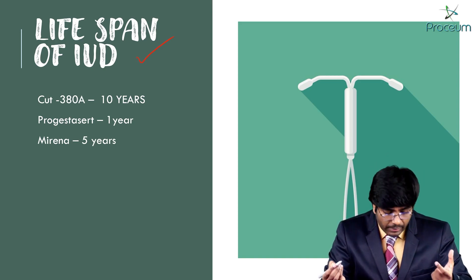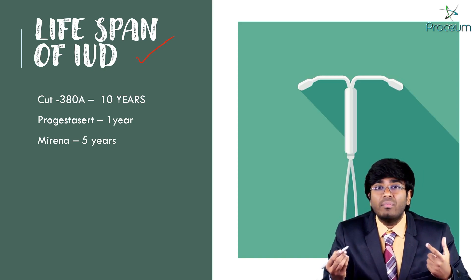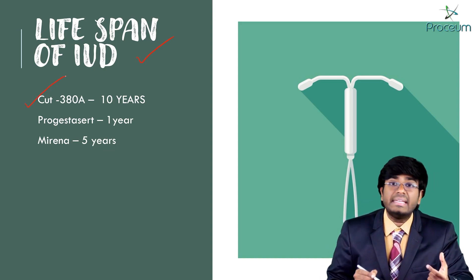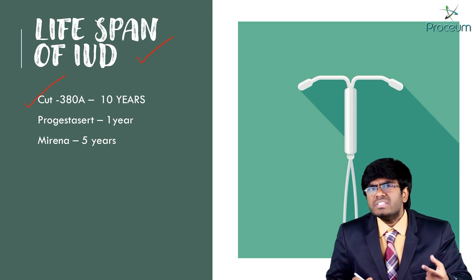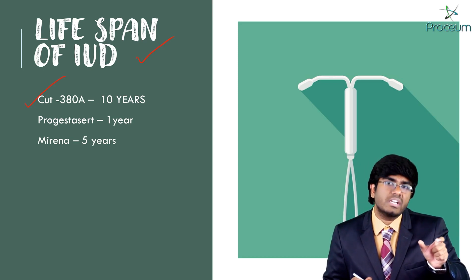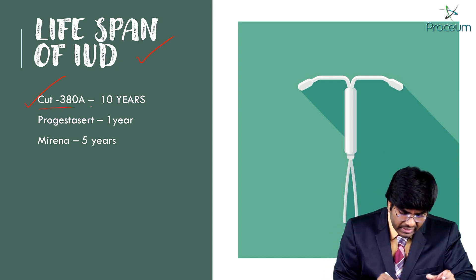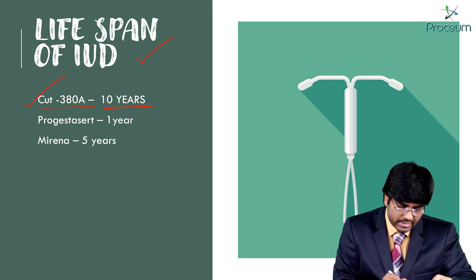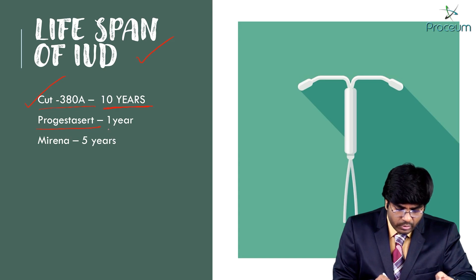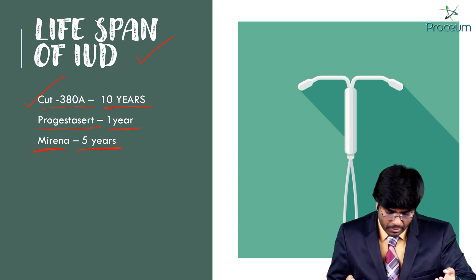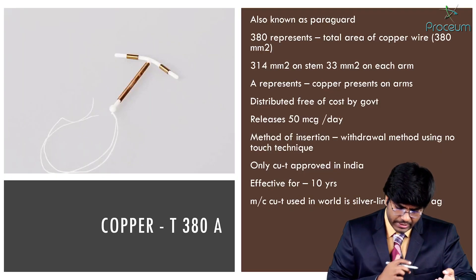Now let's look at important lifespans of intrauterine devices. IUDs generally last about three years on average. However, Copper T380A — a second generation IUD — can work for almost 10 years. Progestacert works for one year, and Mirena works for approximately five years.